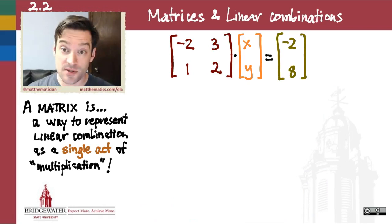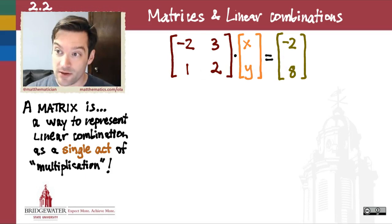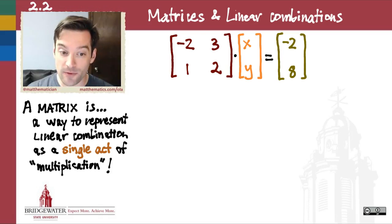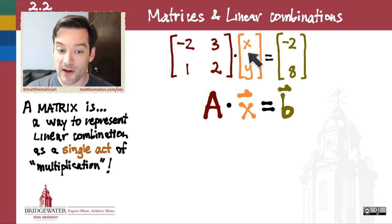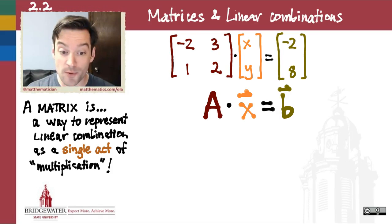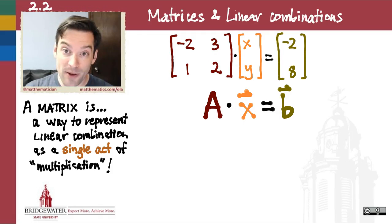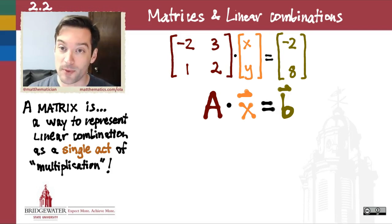Let's give names to the players here. We have a matrix times an unknown vector set equal to a known vector. We'll call the coefficient matrix A, the unknown vector x, and the right-hand side vector B. These are conventional names; matrices are typically written with capital letters to distinguish them from the vectors on which they operate. We take the convention that when a matrix multiplies a vector, the matrix comes on the left and the vector on the right. This formalism will be kept for the rest of the semester.